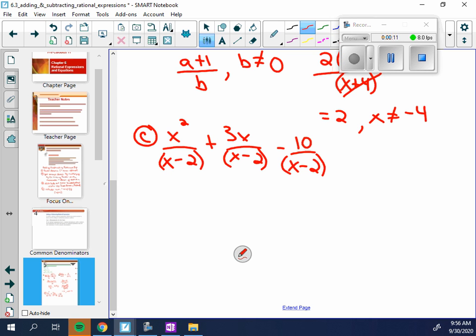Okay, and then we just subtract our numerators. X squared plus 3X minus 10, that's my new numerator. My denominator stays as X minus 2.